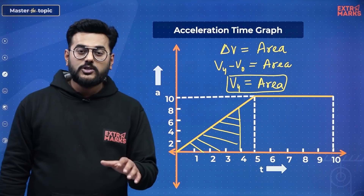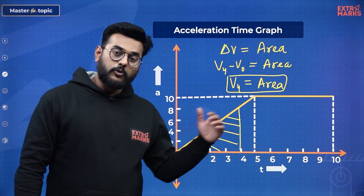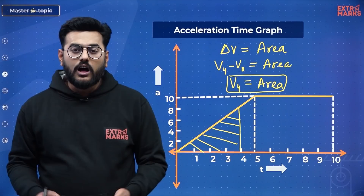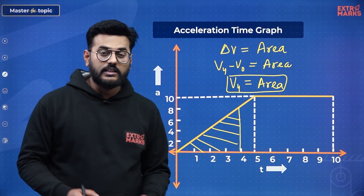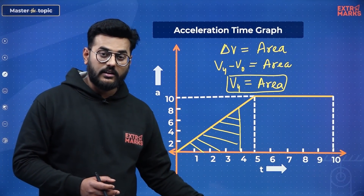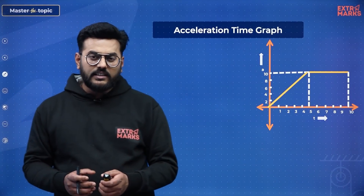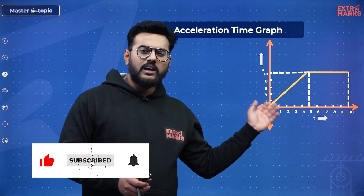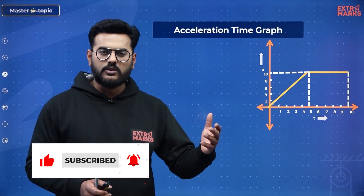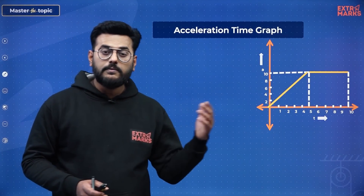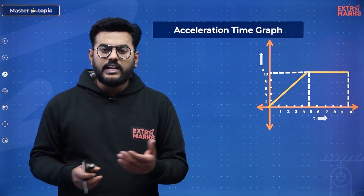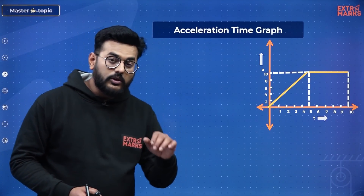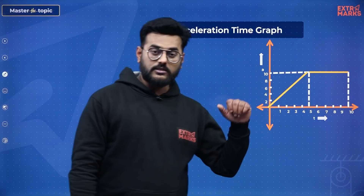Sometimes the exact values aren't asked for — they just want a schematic graph showing the nature of how velocity changes: whether it's a straight line, a parabolic curve, or some other curvature. To find that, I'll segment the AT curve into two sections: from T = 0 to T = 5, and from T = 5 to T = 10.